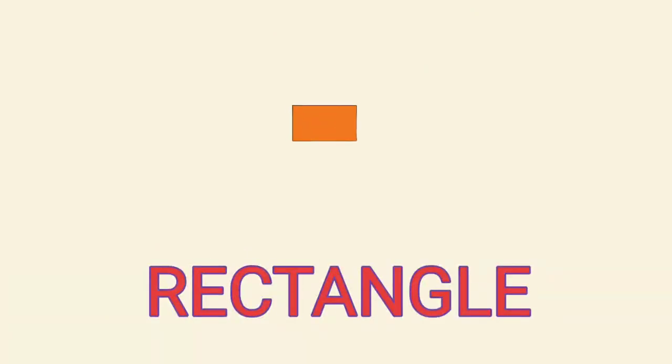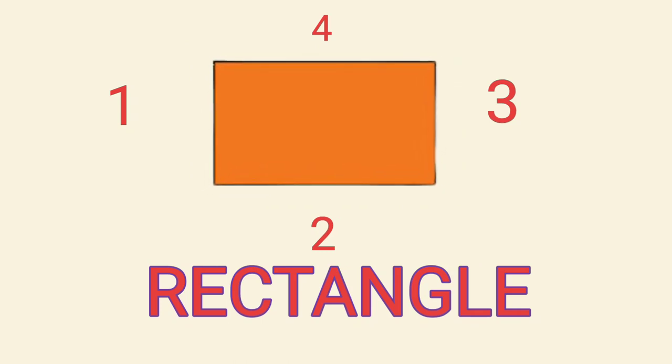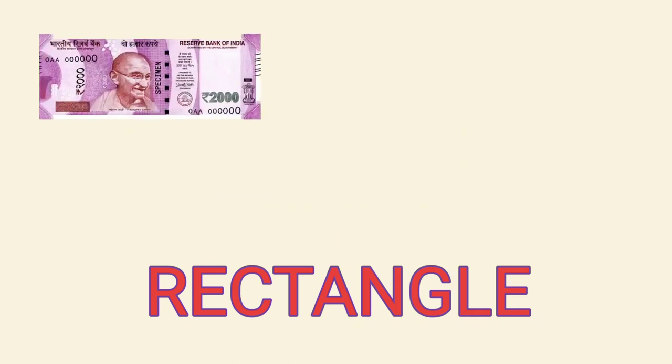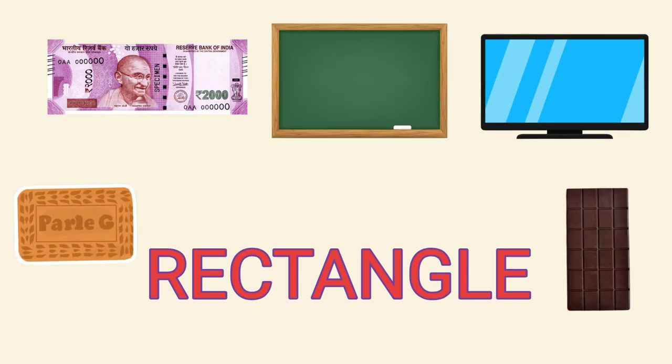Rectangle has four sides and opposite sides are equal. Examples: Money, Blackboard, TV, Biscuit, Chocolate.